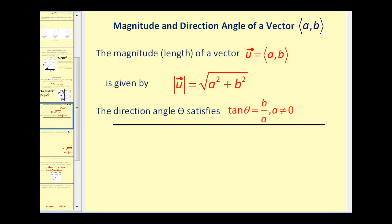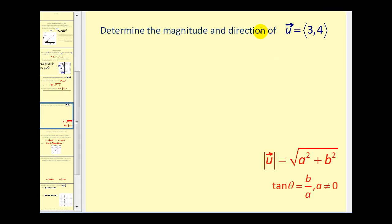Next, let's talk about the magnitude and direction angle of a vector. The magnitude or length of a vector u is given by the square root of a² + b². And the direction angle θ satisfies the equation tan θ = b/a, where a doesn't equal zero. If we want to determine the magnitude and direction of this vector, we first have to have it as a position vector, and we do.